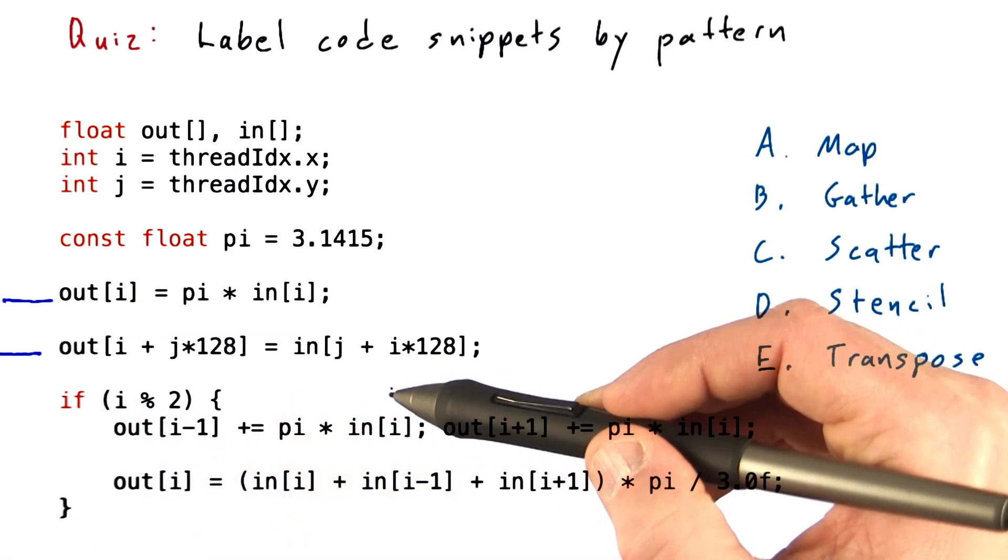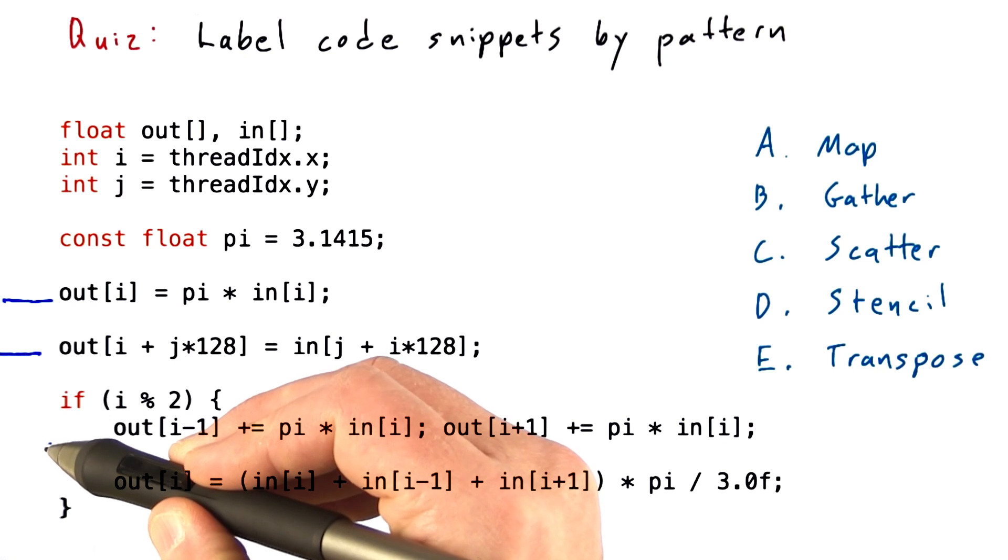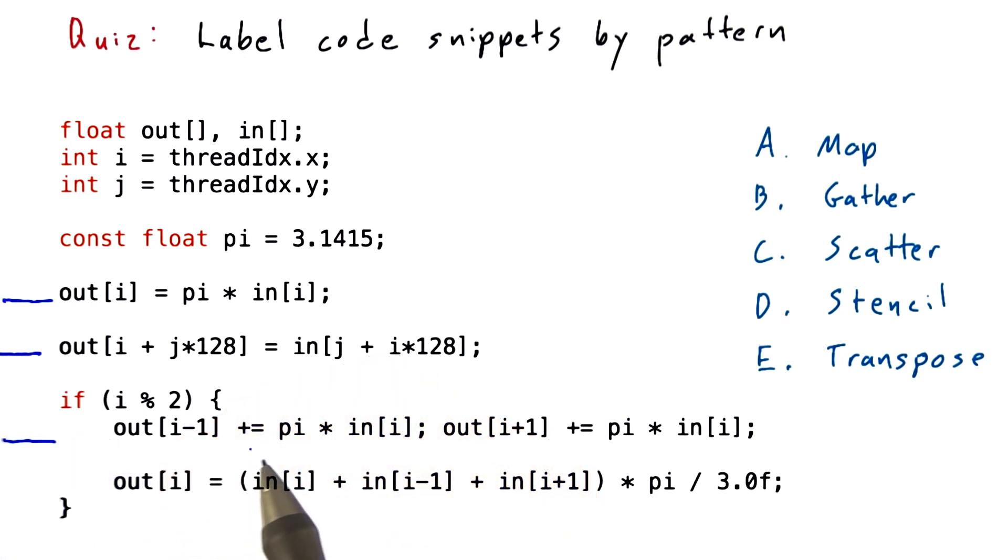and then you see these two I've guarded with an if statement so that only the odd threads get executed. out[i-1] += pi times in[i], out[i+1] += pi times in[i].